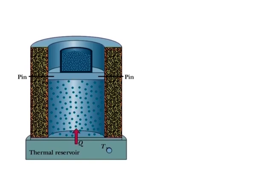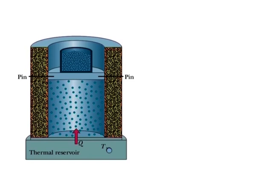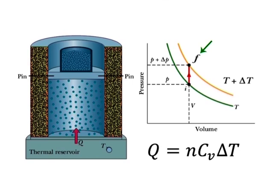Molar specific heat at constant volume. The figure shows n moles of an ideal gas at pressure P and temperature T confined to a cylinder of fixed volume V. The initial state I of the gas is marked on the PV diagram. Suppose you add a small amount of energy to the gas as heat Q by slowly turning up the temperature of the thermal reservoir. The gas temperature rises by delta T and its pressure rises to P + delta P, bringing the gas to final state F. The heat is related to the temperature change by Q = n·Cv·delta T.